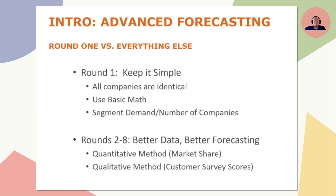We can do a deeper dive into the reports, but ultimately what we're going to find is that we calculate the average. In round one, take your market demand and divide it by the number of companies — you've just figured out the average units sold. Since everybody's the same, the average should be pretty close to what happens. That's not to say you should totally ignore any changes you made; if you're making extreme changes to things like price, it's obviously going to impact what you sell. But if you don't do anything extreme, the average is a good assumption.